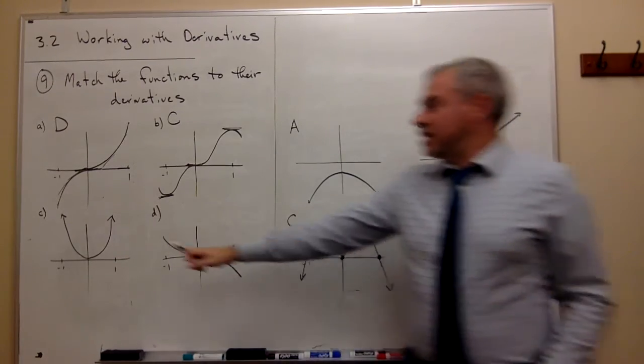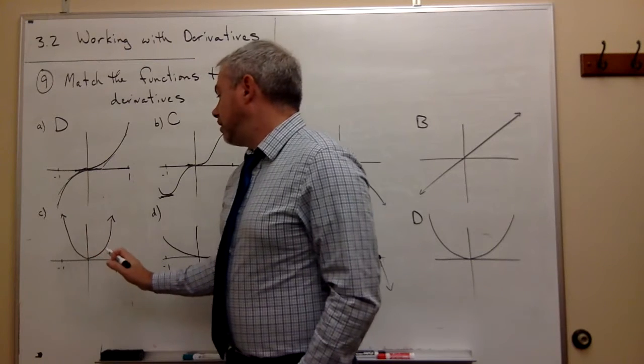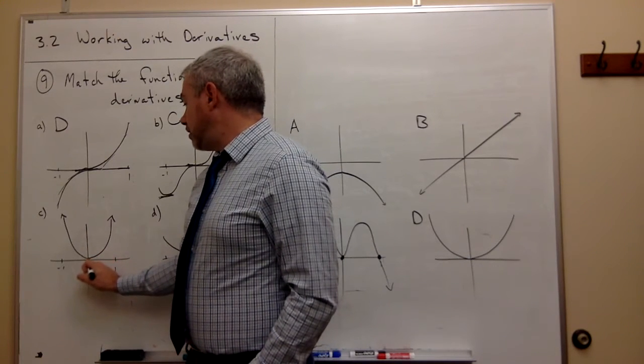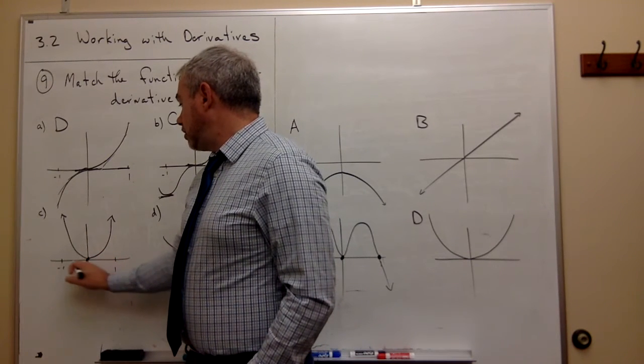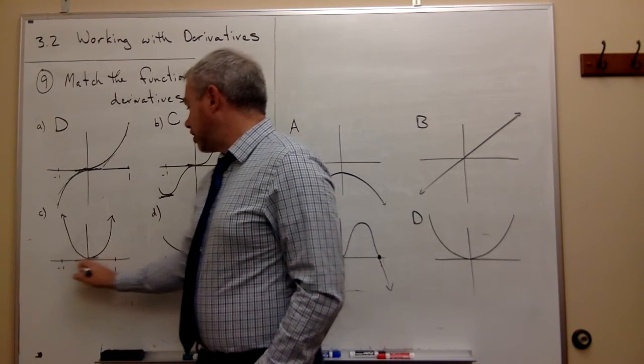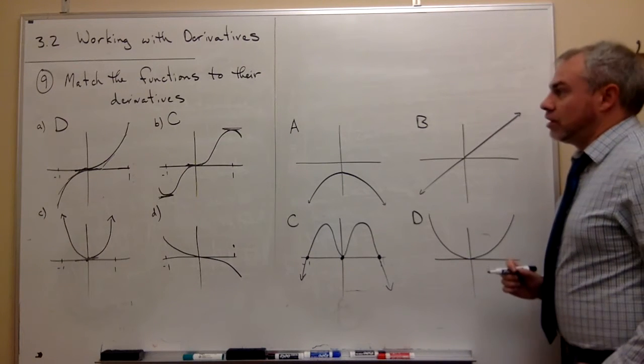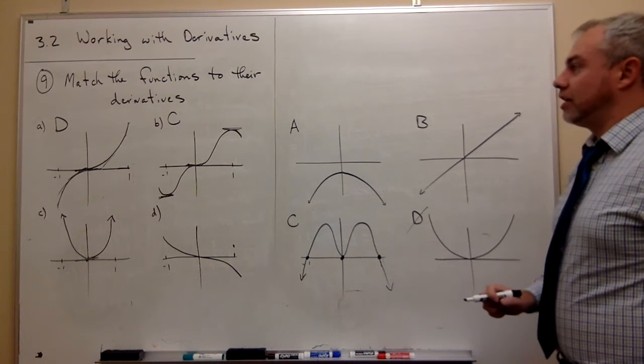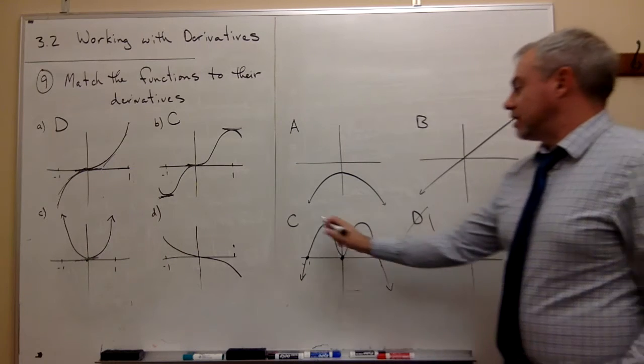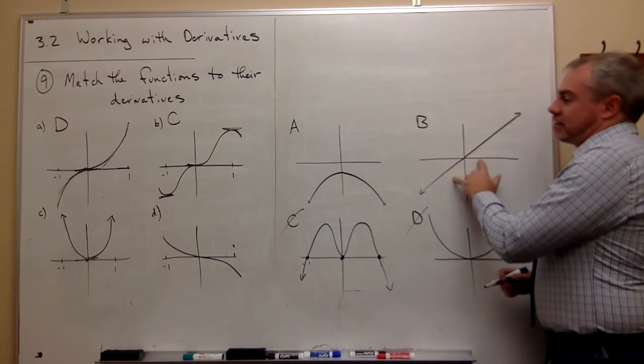For part c, the parabola, what I see is that the only place where the derivative is zero, or where I have a horizontal slope, is at zero. So what are my options? I've already used D, and I've already used C. So what I have left are A and B. So it must obviously be B.